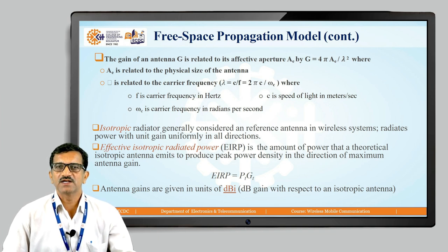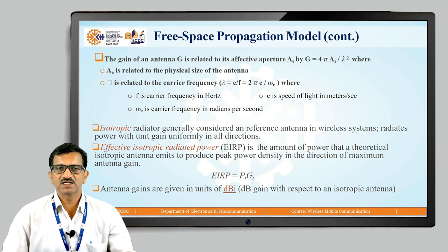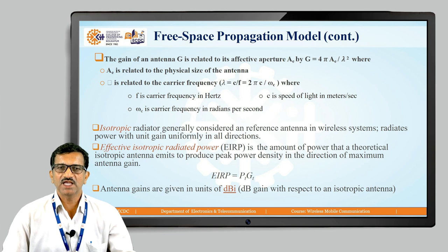An isotropic radiator is generally considered the reference antenna in wireless systems — it radiates power with unit gain uniformly in all directions and is known as the isotropic antenna. One more terminology is the Effective Isotropic Radiated Power (EIRP): the amount of power that a theoretical isotropic antenna would emit to produce the peak power density in the direction of maximum antenna gain. It is calculated as the power transmitted multiplied by the gain of the transmitting antenna. Antenna gains are given in units of dBi — dB gain with respect to an isotropic antenna.